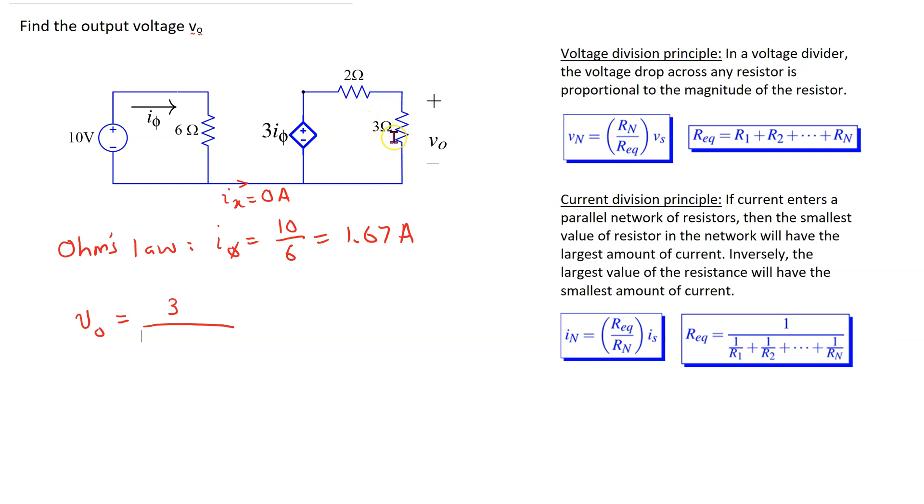And then this is multiplied by the magnitude of this voltage source, which is 3I5, and this gives us the desired expression for the output voltage.